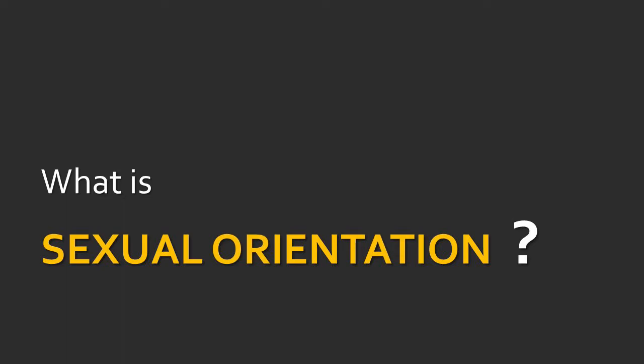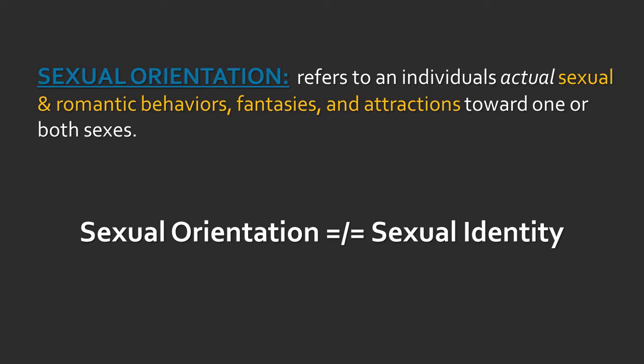So what is sexual orientation? Sexual orientation refers to an individual's actual sexual and romantic behaviors, fantasies, and attractions towards one or both sexes. This isn't about what you call yourself — this is about what you actually feel, what you actually do, what you actually love in a romantic way. This is the distinction between the identity piece and the orientation piece.